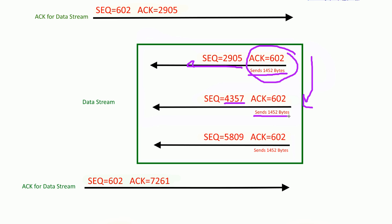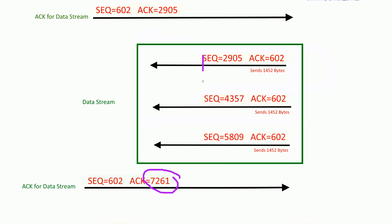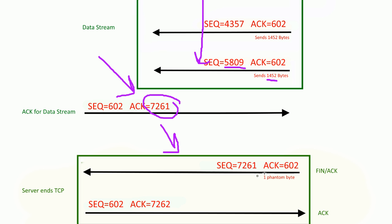We keep counting down through the remaining segments. The last sequence number sent starts at byte 5,809 and we add 1,452 bytes, totaling 7,260 bytes. The acknowledgement comes back as 7,261 — meaning the client received all 7,260 bytes and is expecting byte 7,261 next. When we go down to start ending the connection, that's exactly what we see.